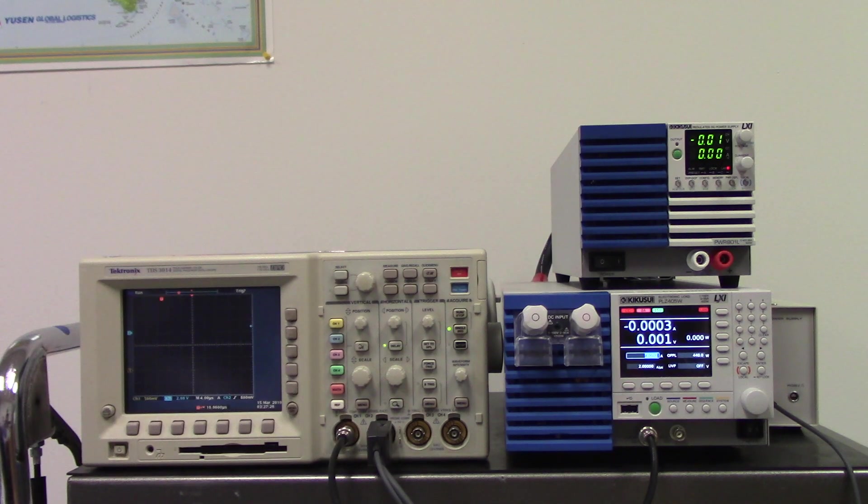The maximum output current is 5mA. The isolation voltage between the BNC connectors and the chassis is plus or minus 30V.